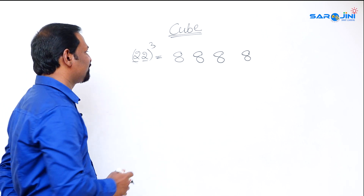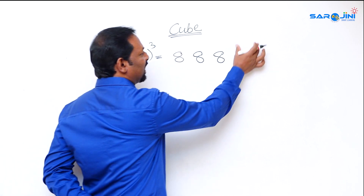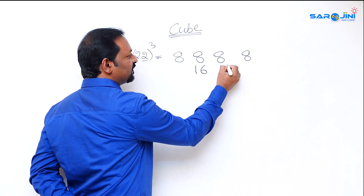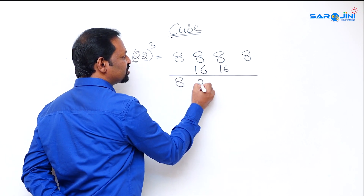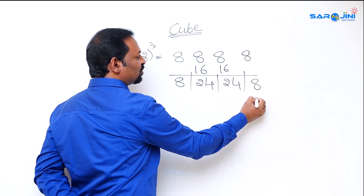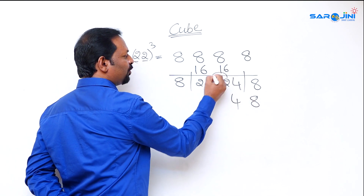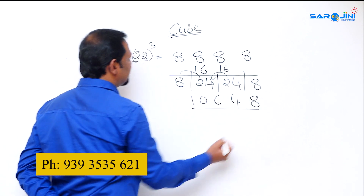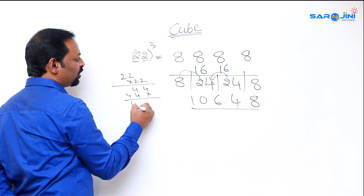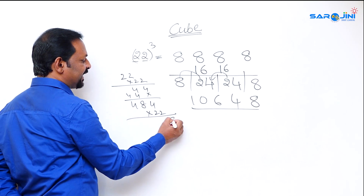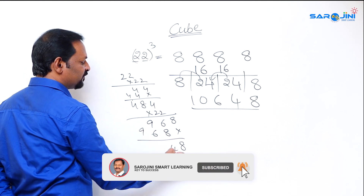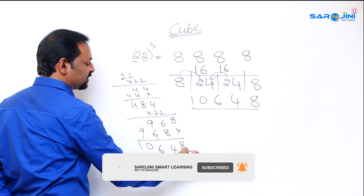The first part and last part remain the same. The middle two terms you double: 8 becomes 16, and 8 becomes 16. So adding across: 8, 24, 24, 8. Here we have double digits, so we balance: carry the tens digit forward. We get 8, 4, 6, 10 — balancing gives us the result. Check: 22 × 22 = 484, then 484 × 22 gives 8, 14, 16, 10 — confirming the answer.